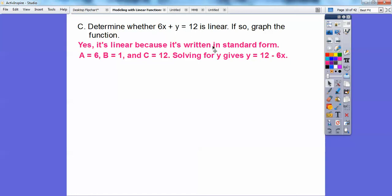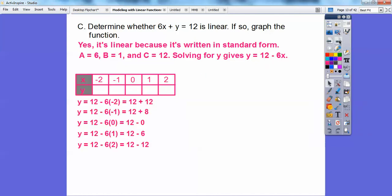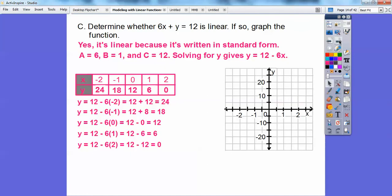So when we solve for Y, we subtract 6X on both sides. Then we make a quick table. This is X and this is Y. So we'll plug in negative 2, negative 1, 0, 1, and 2 for X. When we do that, we get those values: 24, 18, 12, 6, and 0.